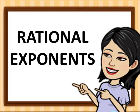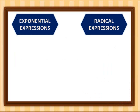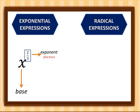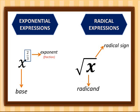This morning you will learn about rational exponents — how to write from exponential into radical expression. Let's have x raised to two-thirds, where x is the base and two-thirds is the exponent. Since we want to write this in radical form, your base becomes the radicand, the numerator two becomes the exponent of the radicand, and the denominator three becomes the index of your radical expression.